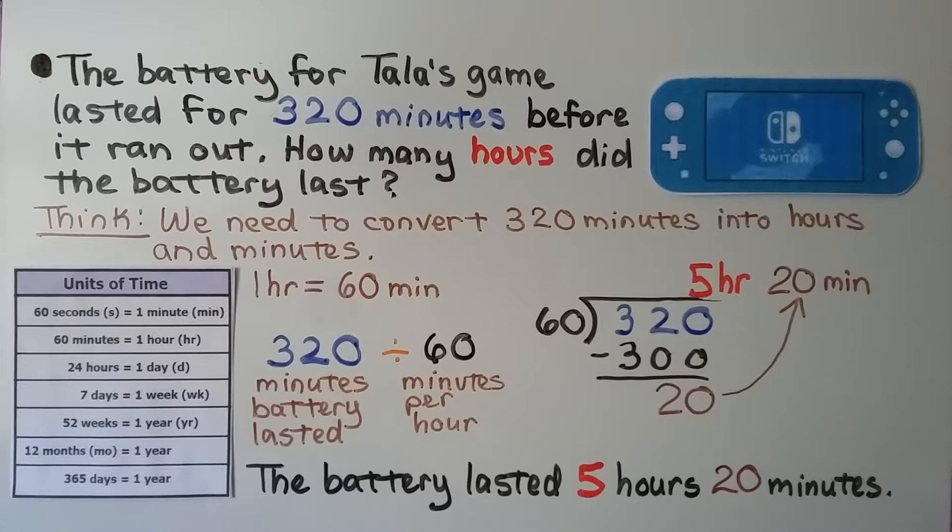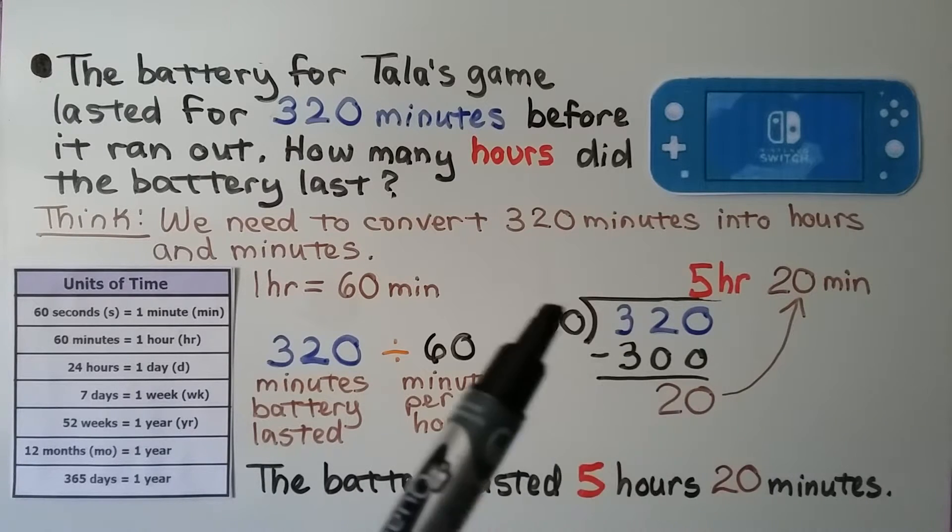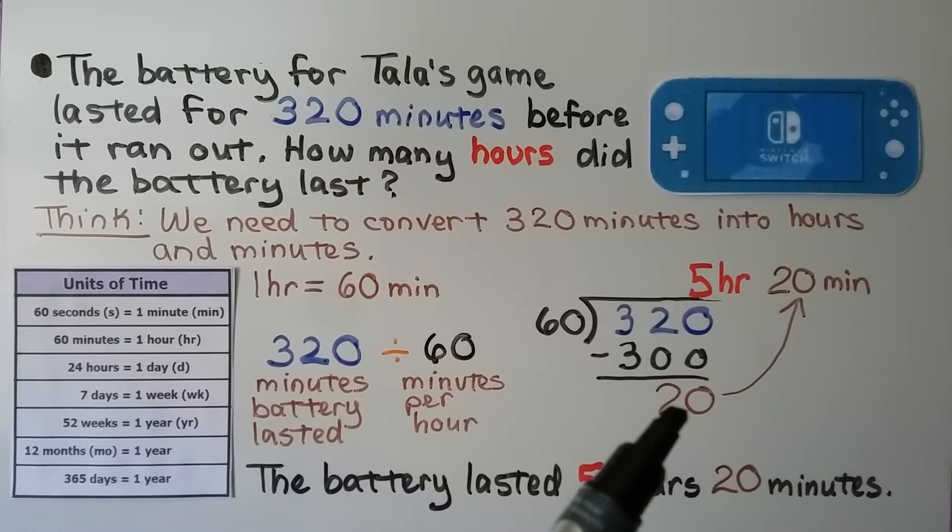We can use the remainder 20 as the number of minutes because we would have 20/60ths, which would be one-third of an hour, which is equal to 20 minutes.